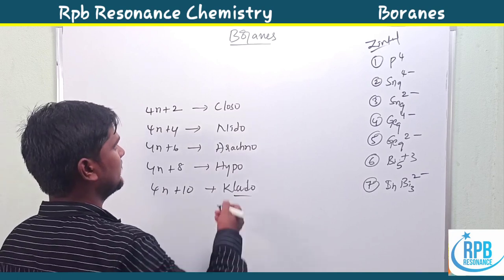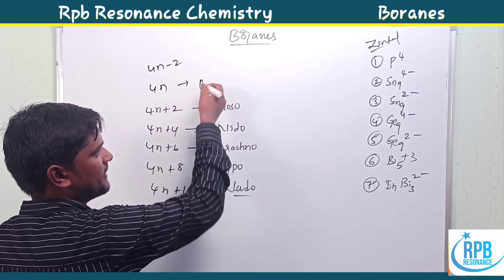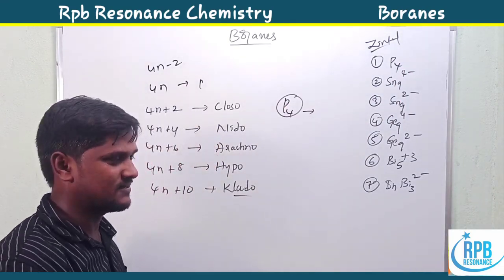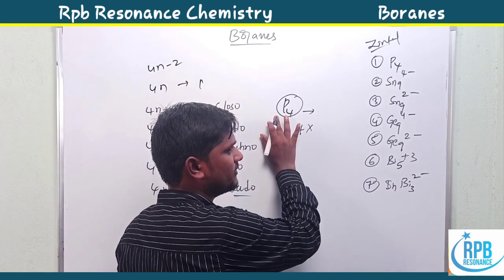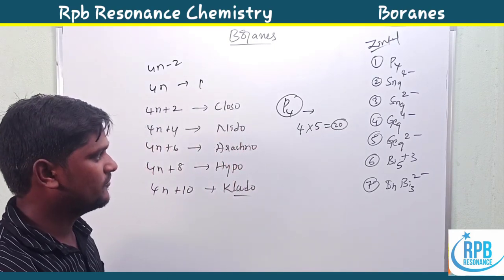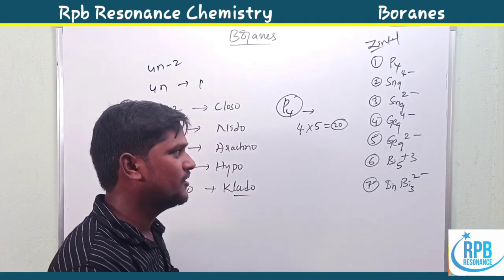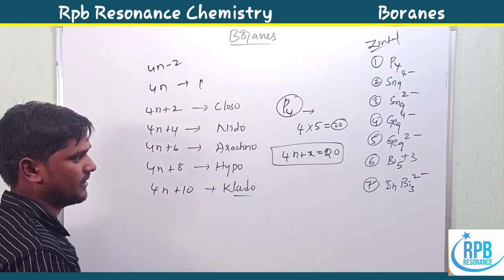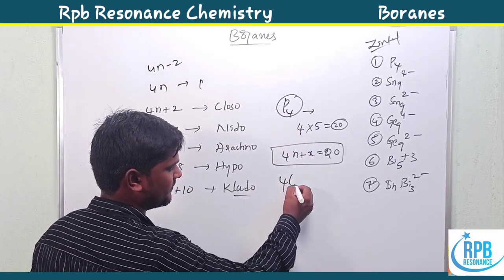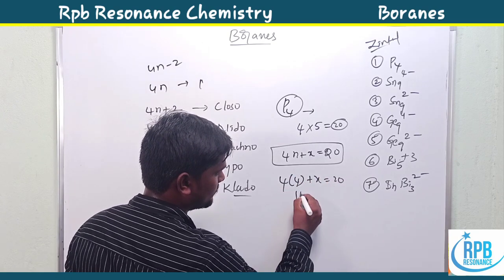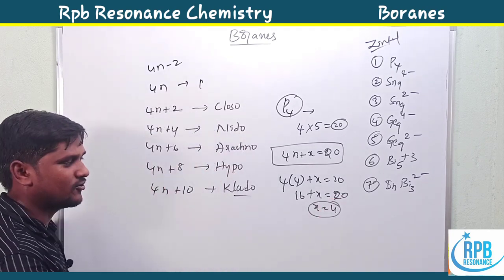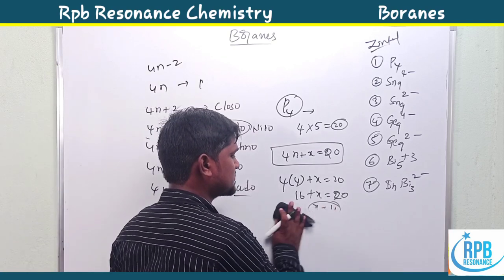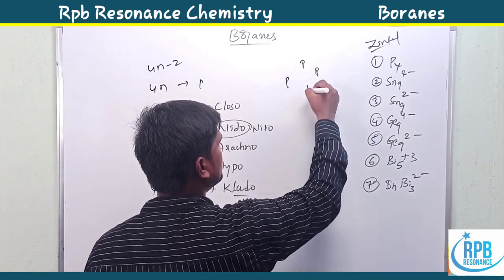Example: P4. First calculate total valence electrons. Phosphorus has 5 valence electrons; 4 atoms × 5 = 20 electrons total. Apply the formula 4n + x = total electrons, where n = number of atoms. So 4(4) + x = 20, giving 16 + x = 20, x = 4. Therefore P4 falls under 4n+4 — nido type structure. This is a GATE 2015 question.